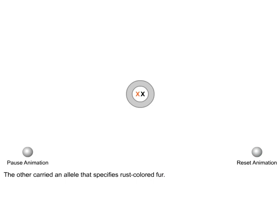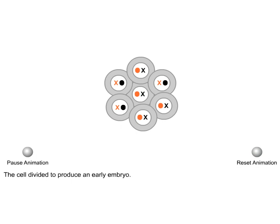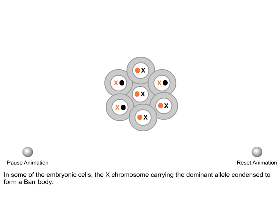The cell divided to produce an early embryo. In some of the embryonic cells, the X chromosome carrying the dominant allele condensed to form a Barr body. In other cells, the X chromosome with the allele that specifies rust-colored fur was inactivated.